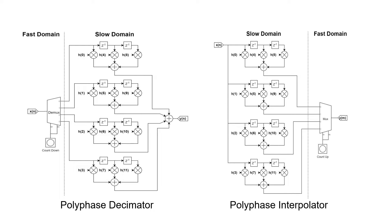Polyphase filters are a class of specialized filters used in sample rate conversion. Whereas most FIR filters have one delay line, polyphase filters have multiple. To understand the logic behind this, we'll first have to dive into the topic of sample rate conversion.